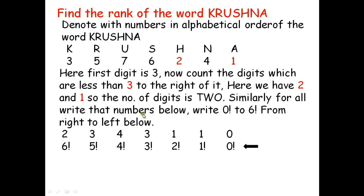For S, denoted by 6, the digits less than 6 to its right are 2, 4, and 1 — that is 3 digits, so write down 3. For H, denoted by 2, we have only 1 digit less than 2, so write down 1. For N, denoted by 4, we have only 1 digit less than 4, so write down 1. Finally, for A, denoted by 1, there is no digit to the right, so write down 0.